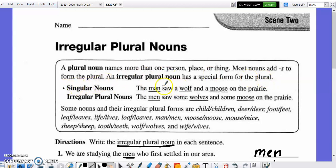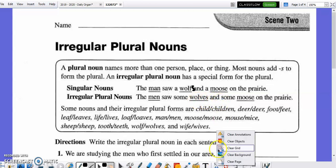Here's an example. Singular noun, the man saw the wolf and a moose on the prairie, would get transformed with its irregular plurals. The men, instead of just adding an S here, you have an irregular plural with the word man. Instead of adding an S to wolves, it gets changed to wolves, W-O-L-V-E-S. And sometimes, it just stays exactly the same. Moose, the irregular plural is moose.